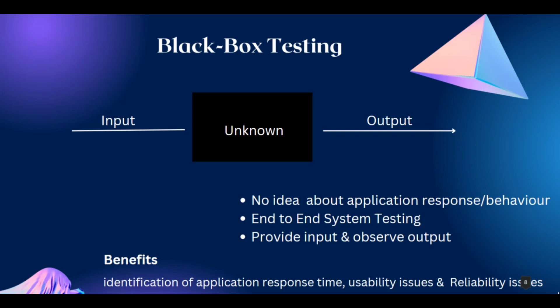You will browse the site, select a product, and try to make a payment. Throughout all these processes you don't know how the application behaves — whether you will be able to successfully add to cart or not, there may be payment failures, and there will be different scenarios as an end user that you don't know. That is why black box testing is called end user testing or end-to-end system testing, where the tester doesn't know whether the application fulfills its promises or not.